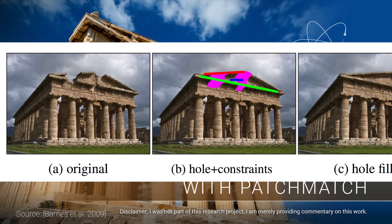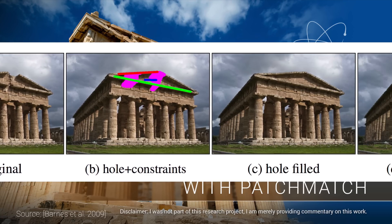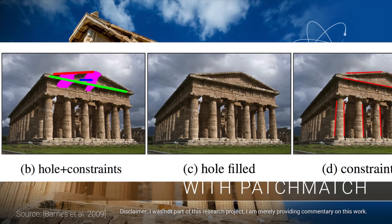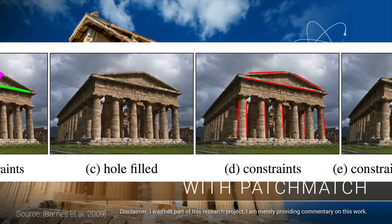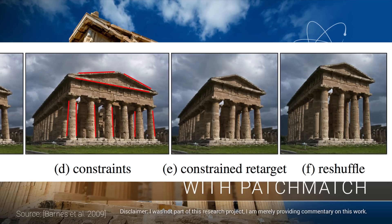Consider the following workflow. We have this image as an input. Let's mark the roofline for hole filling, or image inpainting as the literature refers to it, and the hole is now filled with quite sensible information. Now we mark some of the pillars to reshape the object, and then we pull the roof upward. The output is a completely redesigned version of the input photograph. Wow! Absolutely incredible.